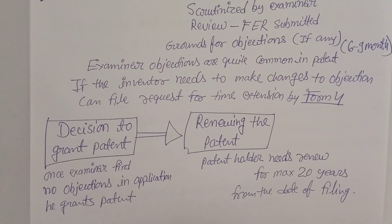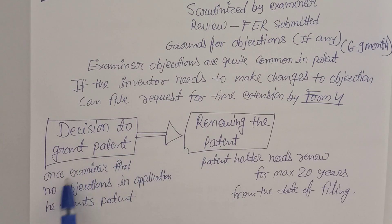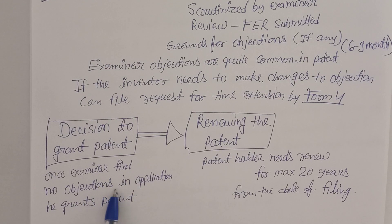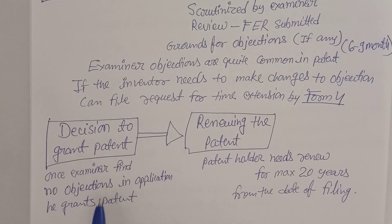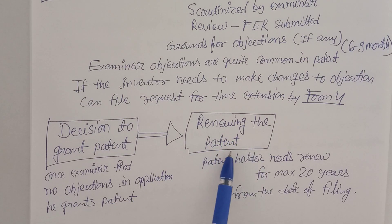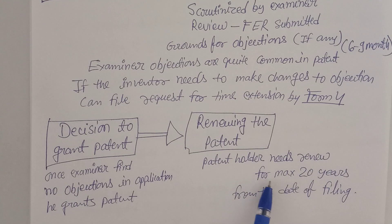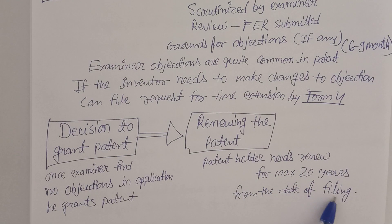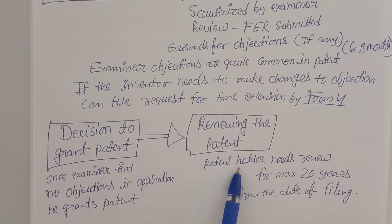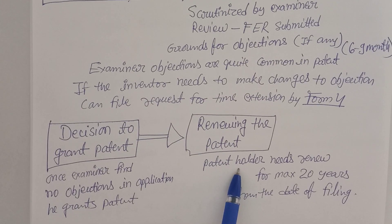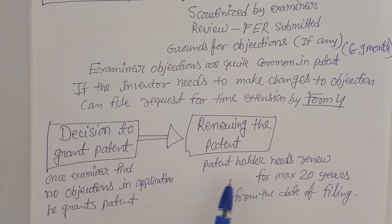The sixth step is decision-making — the grant of the patent. Once the examiner finds no objections from any corner of the application, they grant the patent. After granting, the patented method, drug, or information is protected. The seventh step is renewing the patent. The patent holder needs to renew it for a maximum of 20 years from the date of filing.